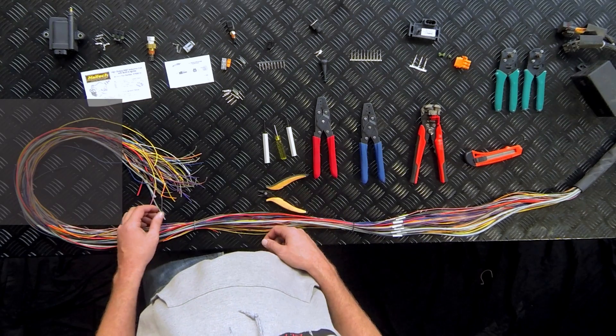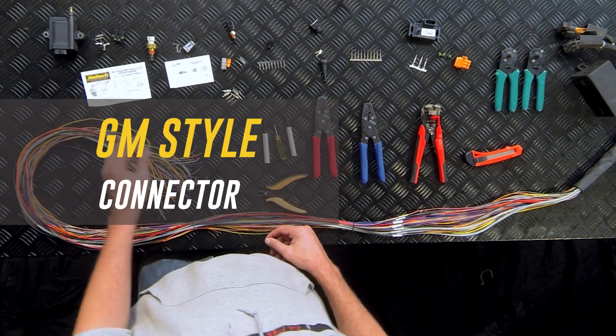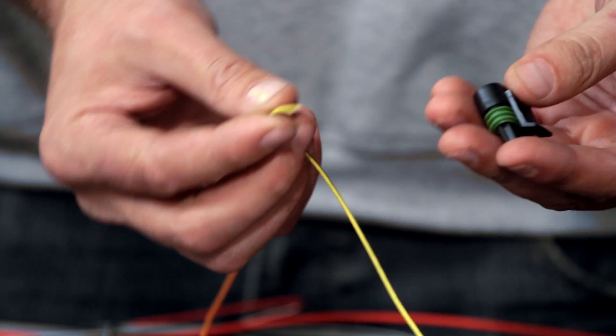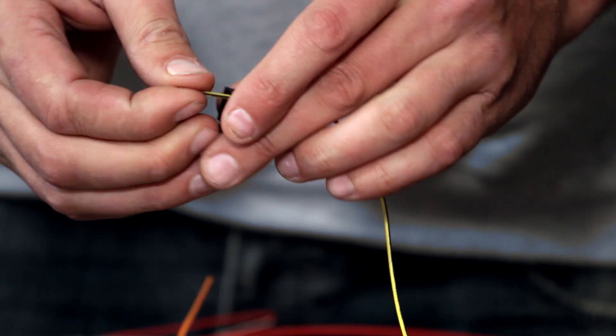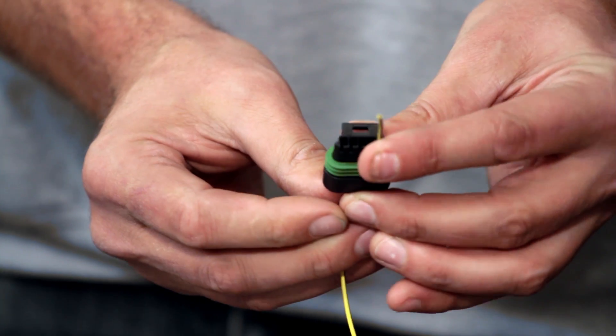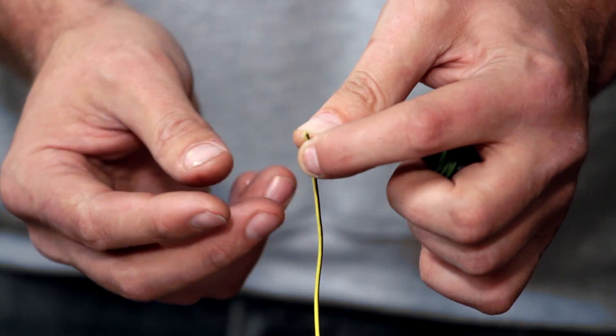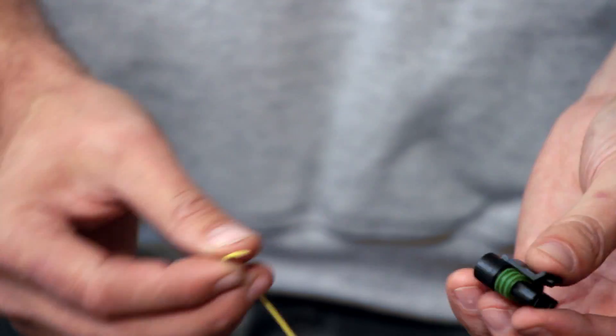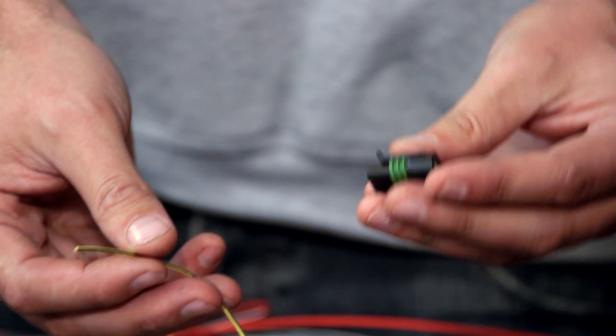Okay so the first connector we're going to be speaking about is the GM pull-to-seat style connector. What actually happens here is that we put our wire through the connector first before stripping it, then we're going to strip it, put our pin on then pull it back to seat. If we put a pin straight onto this wire before we put it through the connector there's no way to get it through, so we've just crushed that pin and wasted it.